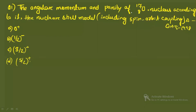Hey guys, welcome back. In the last video we discussed the theory of the shell model and saw some tricks. Those theories will be used in this video to solve problems. Let's start the first question: it says that the angular momentum and parity of oxygen-17 nucleus according to the nuclear shell model, including the spin-orbit interaction, is what we need to find.